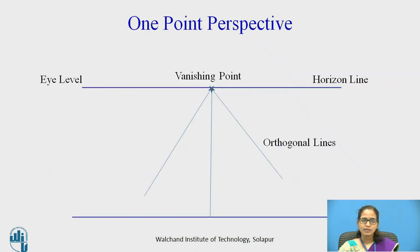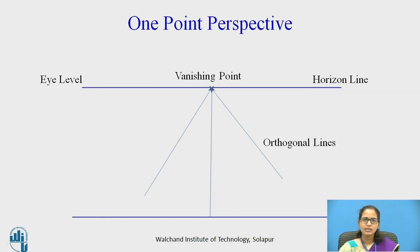Here you can see the horizontal line, which is drawn towards the top of the paper. The vanishing point is placed on the horizontal line, at the eye level. The orthogonal lines — the projections — are lines drawn parallel that appear to get closer and closer, and are joined to the vanishing point.